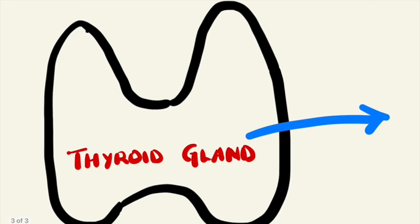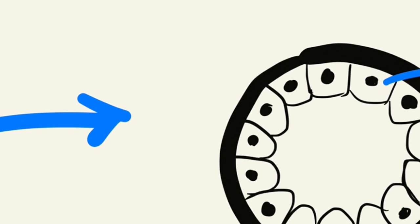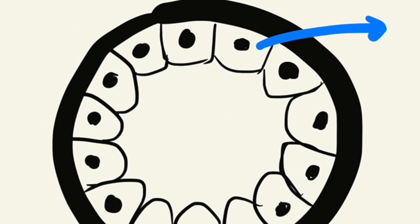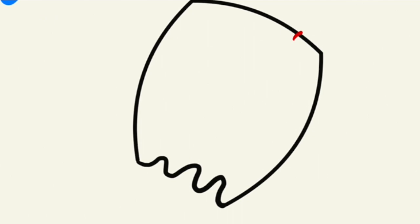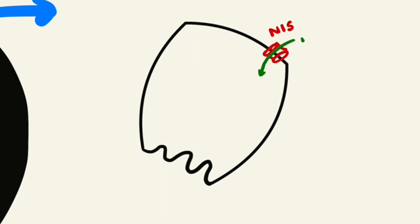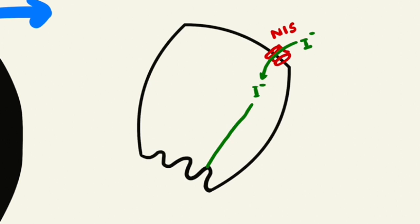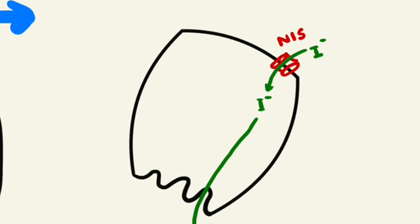This is the thyroid gland. All of you know that the thyroid gland is composed of many follicles, and each follicle is lined by follicular cells which have an apical surface and a basolateral surface. On the basolateral side, there is a transporter called sodium iodide symporter, NIS. The function of this symporter is to take up iodide from the blood into the follicular cell, and this iodide is transferred into the follicular lumen or into the colloid with the help of a protein called pendrin.